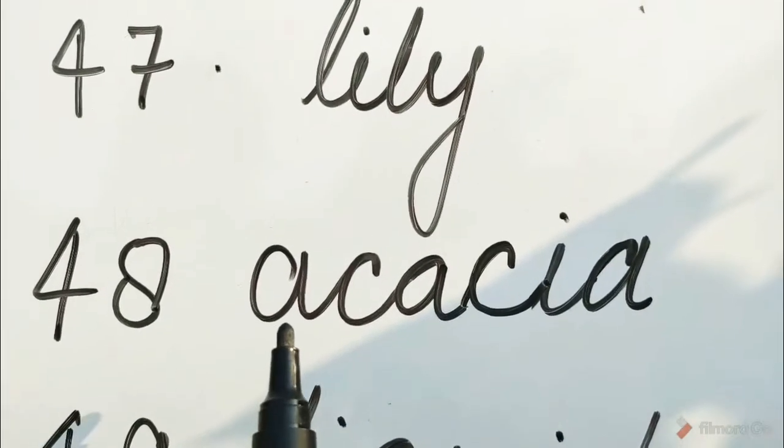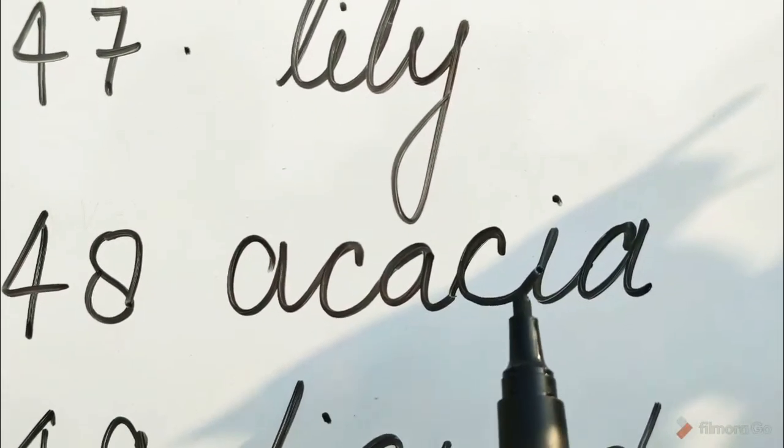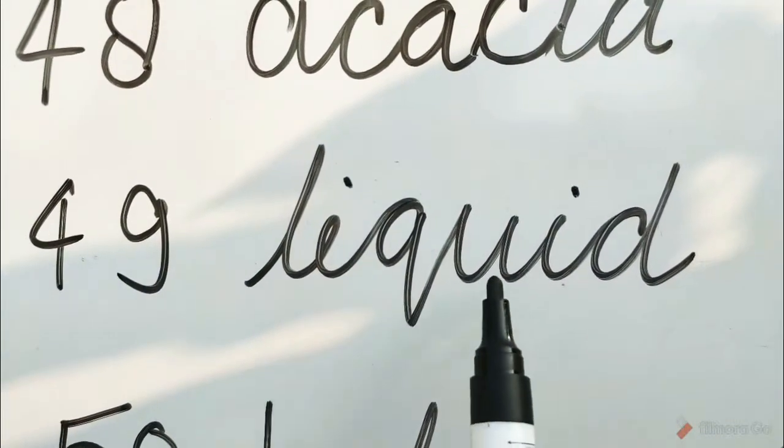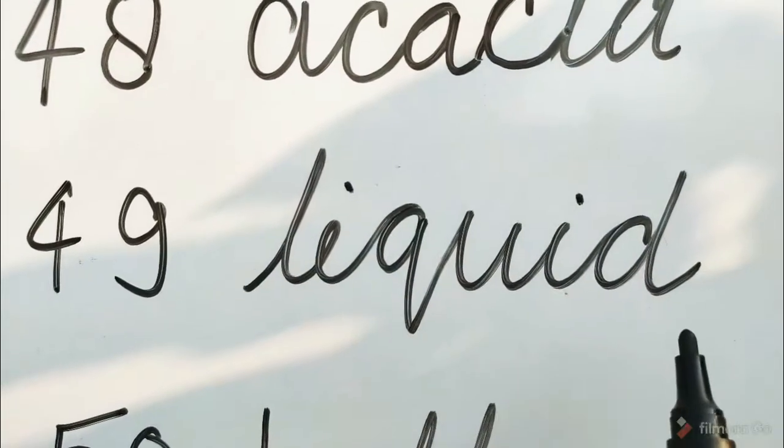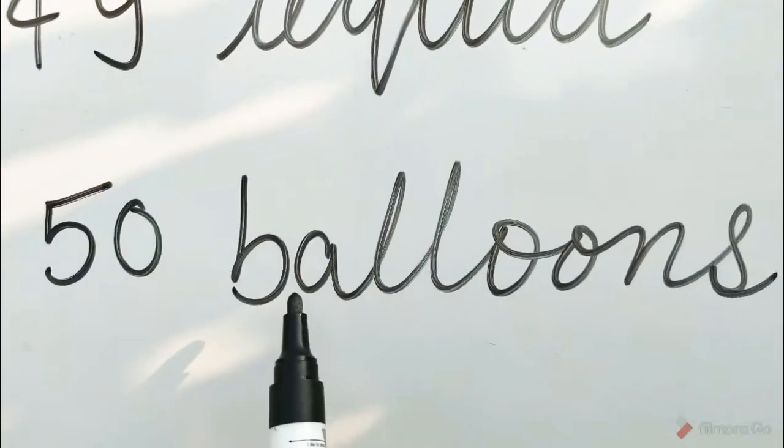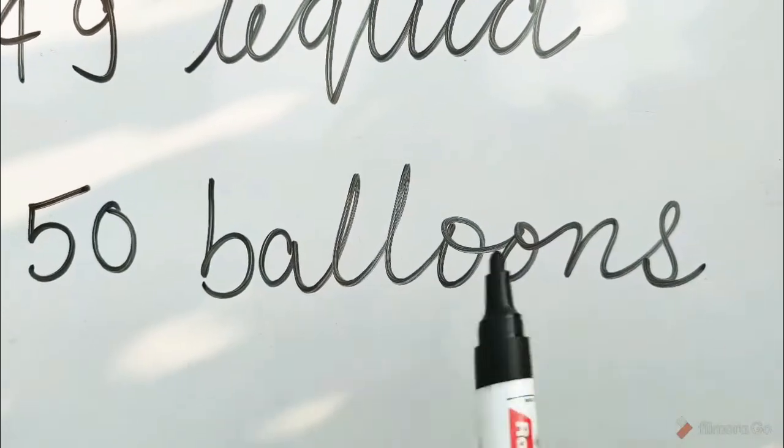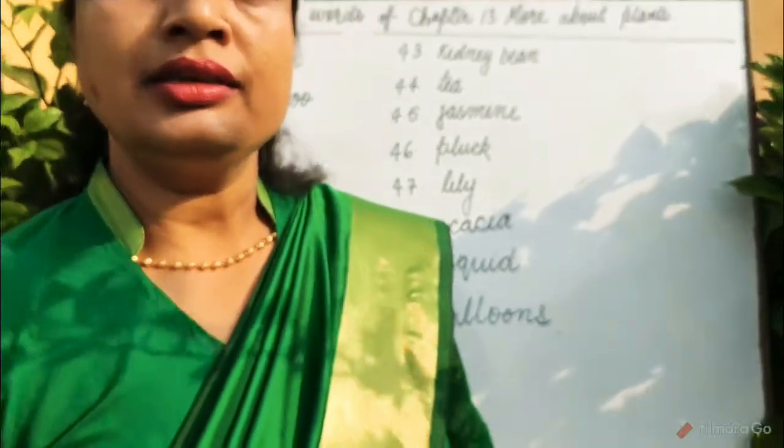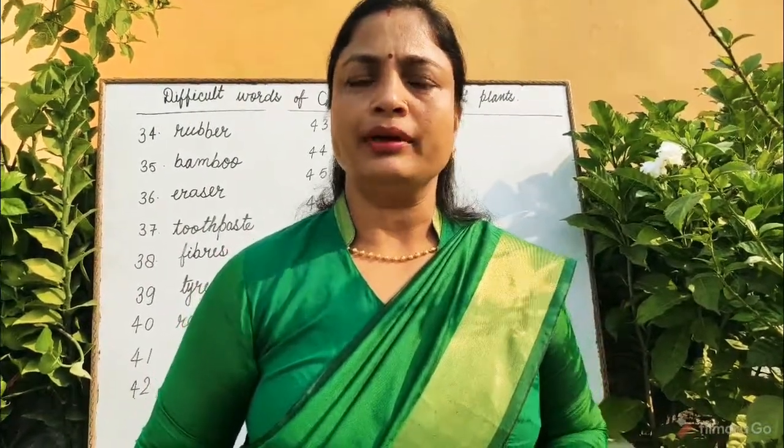Number 49: L-I-Q-U-I-D, liquid. Number 50: B-A-L-L-O-O-N-S, balloons. Children, these are the difficult words of Chapter 13, More About Plants. Learn it carefully. Let's know about words meaning of Chapter 13, More About Plants.